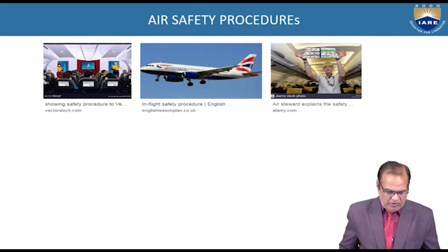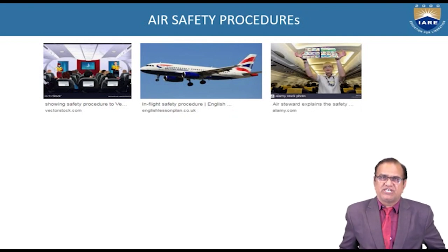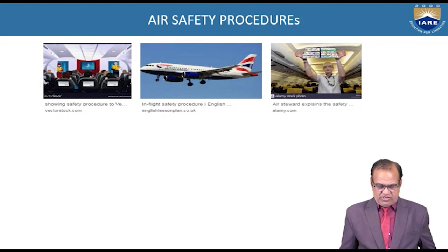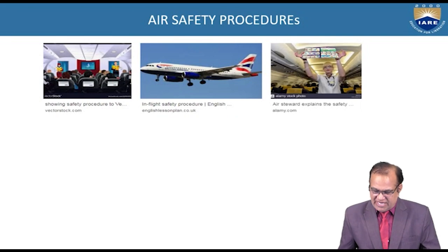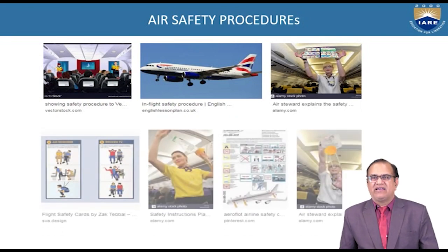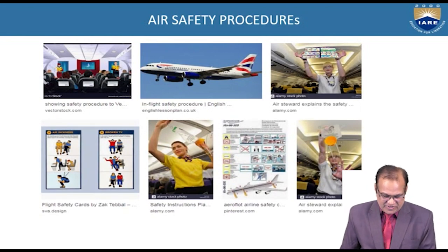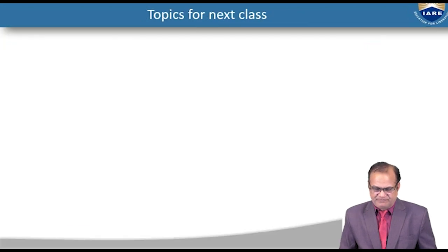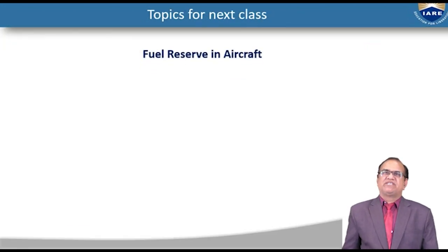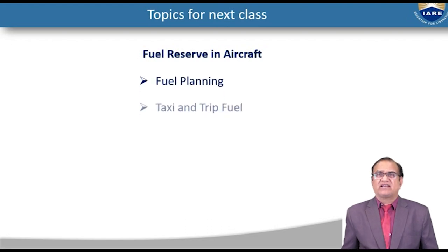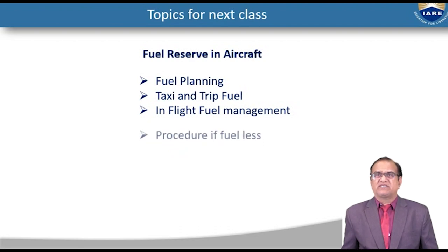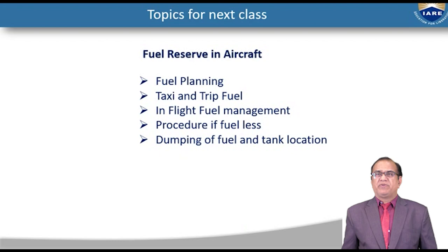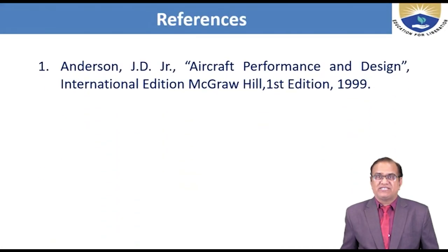Air safety procedures include several categories: aircraft safety procedures, vector stock safety, and in-flight safety procedures. During the flight, air crew demonstrate safety charts, air stewards explain safety alarms, and flight safety cards are distributed. The next topic will cover fuel reserve in aircraft, fuel planning, taxi and trip fuel, in-flight fuel management procedures, fuel dumping, tank location, and fuel calculation for flight planning.